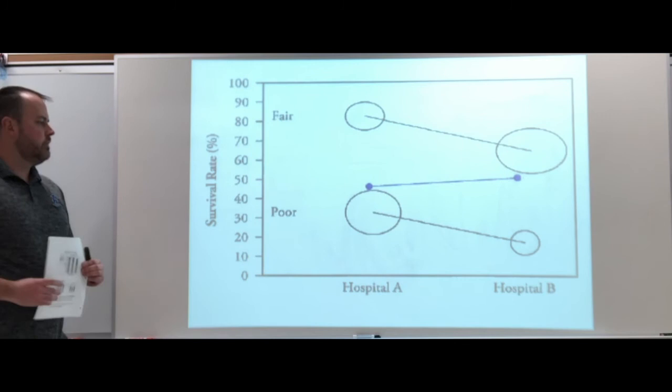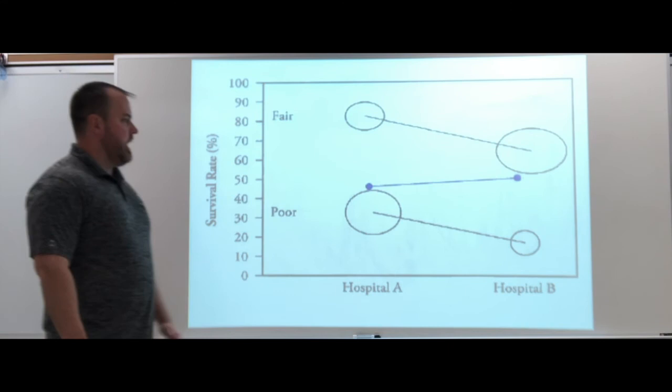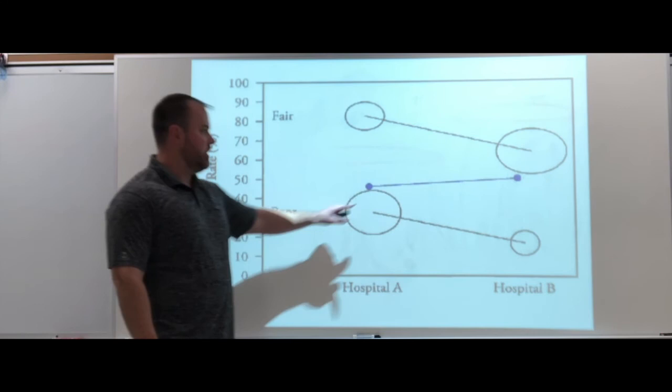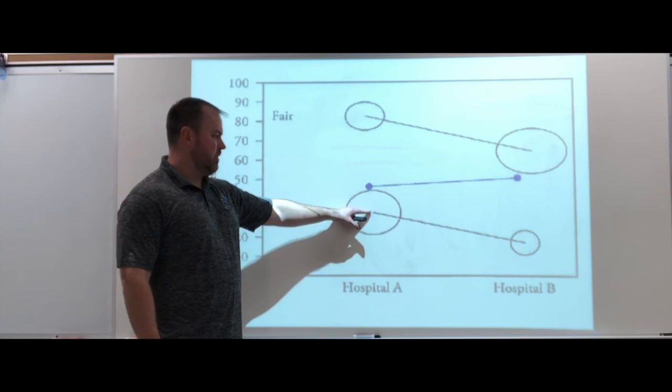Now here's a little diagram just to show that a little differently. Those circles represent the patients. So Hospital A had a higher volume at the poor, which had a lower percentage. That brought this blue line down. That's their overall rate.